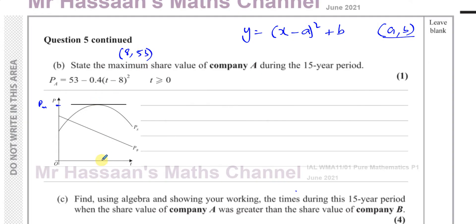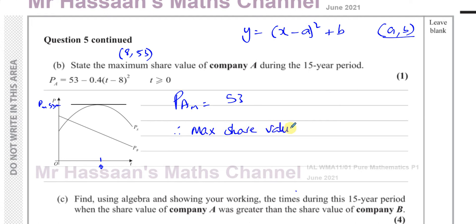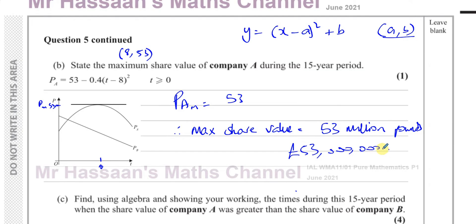So when T = 8, that's after 8 years, the maximum share value is reached. We don't need the T value since the question only asks for the maximum share value of Company A. The maximum value is PA = 53 million pounds. Remember again, you must write it as 53 million pounds, because that's what P represents.